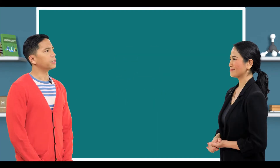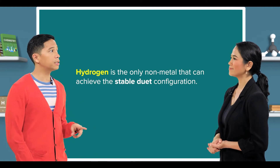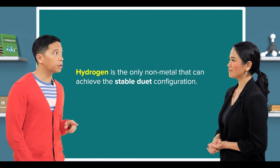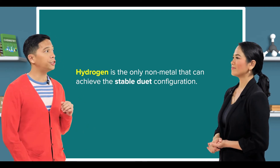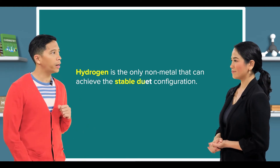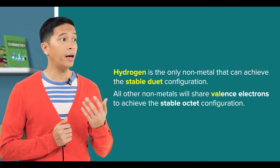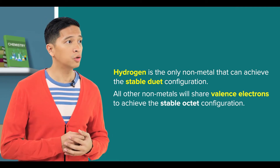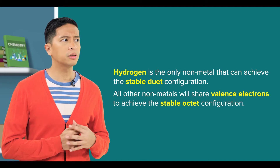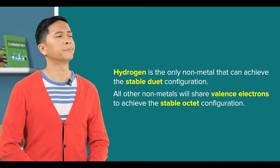Teacher, I recall that hydrogen is the only non-metal that can achieve a stable duet. All other non-metals will share valence electrons to achieve the stable octet configuration. That's right. For all other non-metals, it will be an octet configuration.